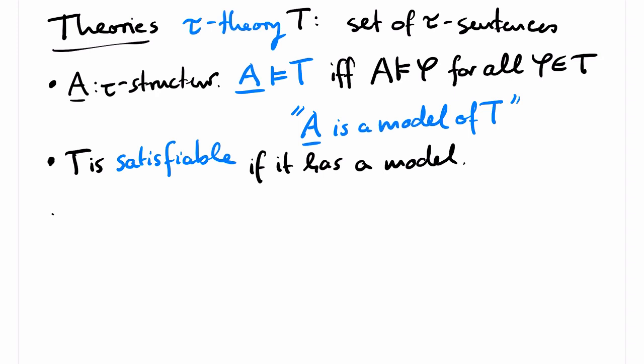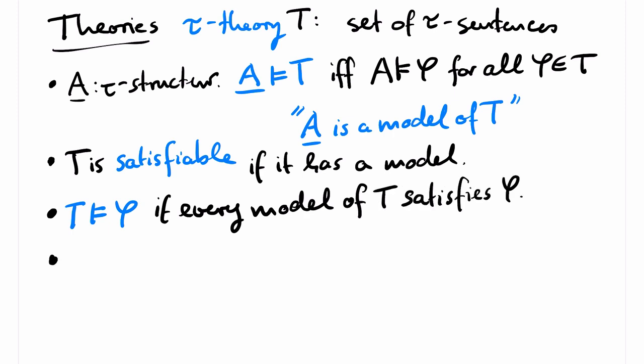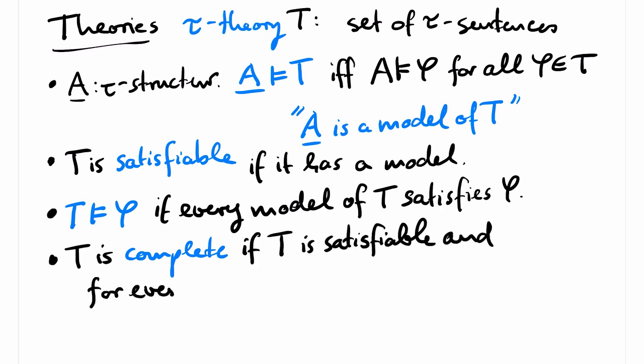We say that T implies phi if every model of T also satisfies phi. A tau theory is called complete if T is satisfiable and for every tau sentence, either T implies phi or T implies not phi.